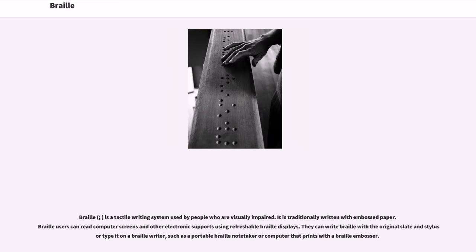Braille is a tactile writing system used by people who are visually impaired. It is traditionally written with embossed paper. Braille users can read computer screens and other electronic supports using refreshable Braille displays. They can write Braille with the original slate and stylus or type it on a Braille writer, such as a portable Braille note taker or computer that prints with a Braille embosser.